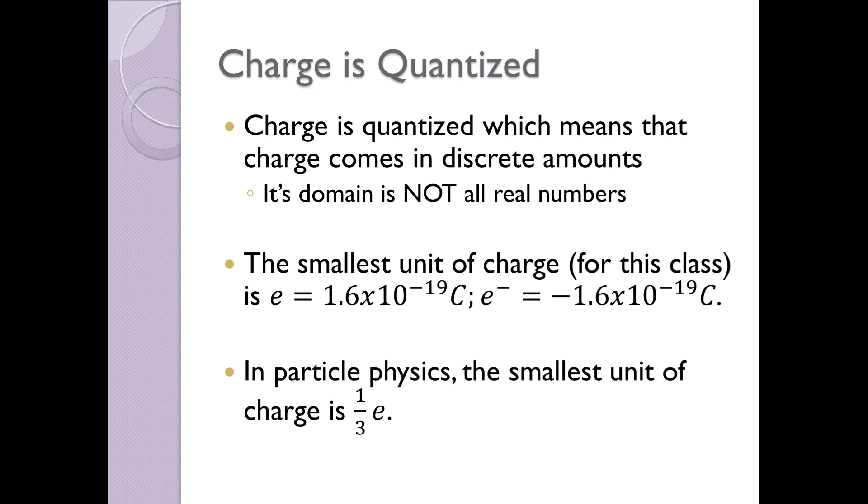So we say that charge is quantized, which means that it comes only in integer multiples of that 1.6 times 10 to the minus 19. So I could have 1.6 times 10 to the minus 19, 3.2 times 10 to the minus 19, or 3 times that, or 4.8 times 10 to the minus 19. But I can't have any numbers in between. I can't have 1.7, I can't have 0.5. That's what it means to be quantized. It basically comes in integer multiples of that unit.